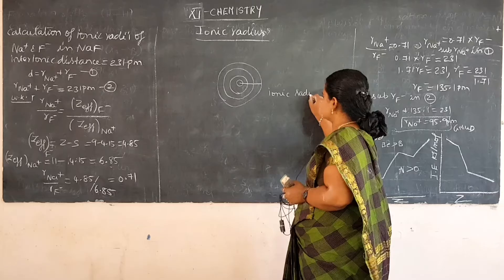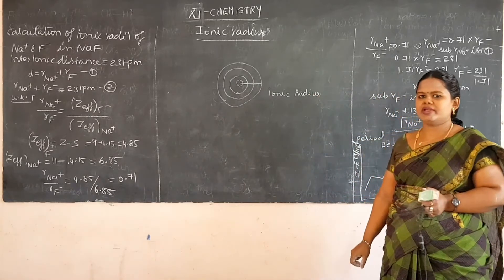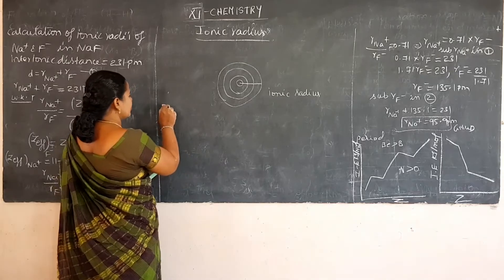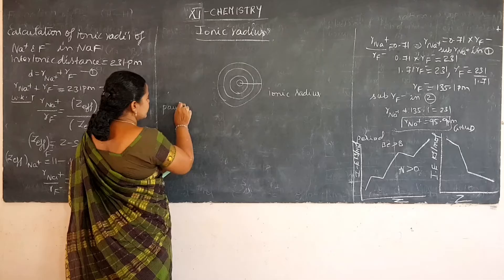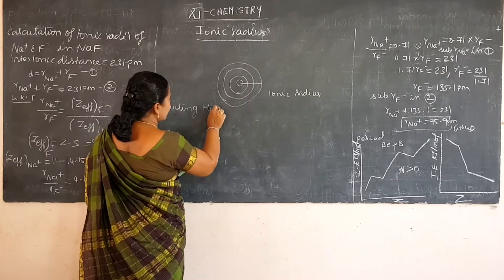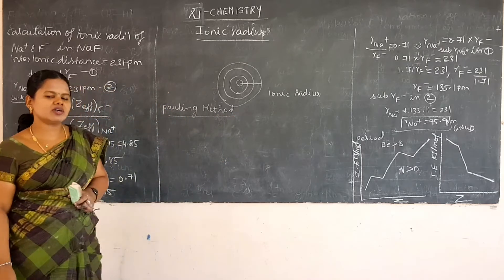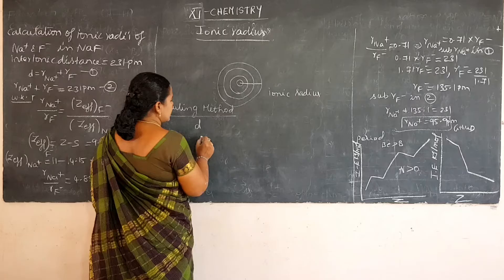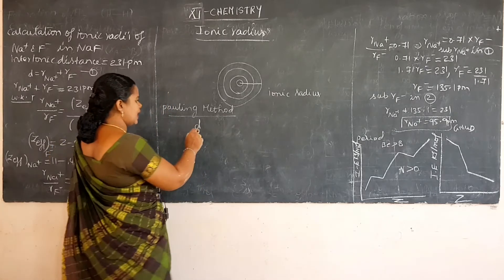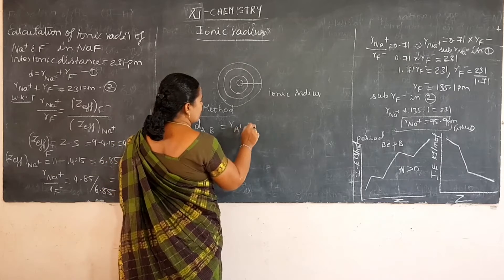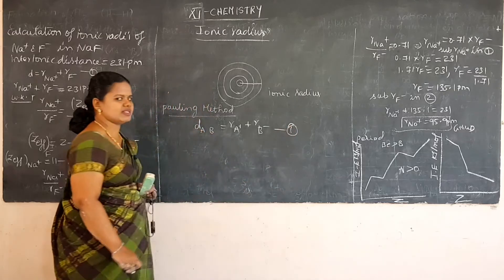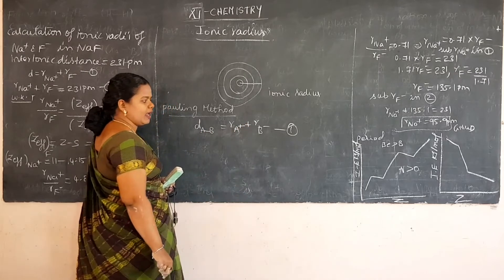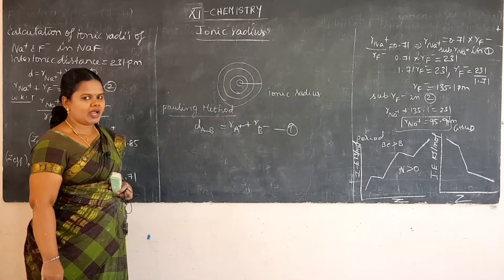The radius of an ion is known as ionic radius. Pauling estimated how to calculate the ionic radius. This is known as the Pauling method to determine ionic radii. Pauling considered the ions as perfect spheres. The distance between two atoms, for example A and B, can be given as d(AB) = r_A+ + r_B-. That is the first equation.